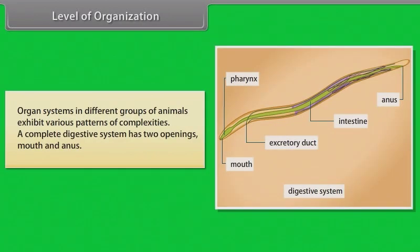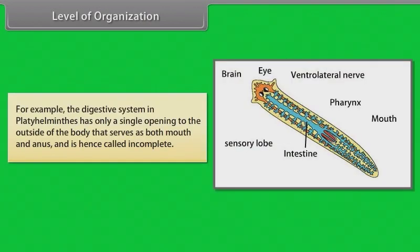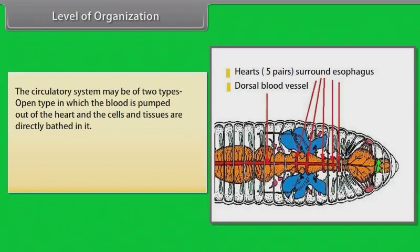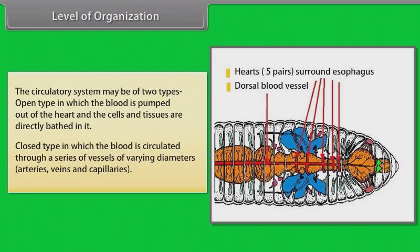Organ systems in different groups of animals exhibit various patterns of complexity. A complete digestive system has two openings: mouth and anus. The digestive system in Platyhelminthes has only a single opening that serves as both mouth and anus, and is hence called incomplete. The circulatory system may be open type, where blood is pumped out of the heart and cells are directly bathed in it, or closed type, where blood circulates through arteries, veins and capillaries.